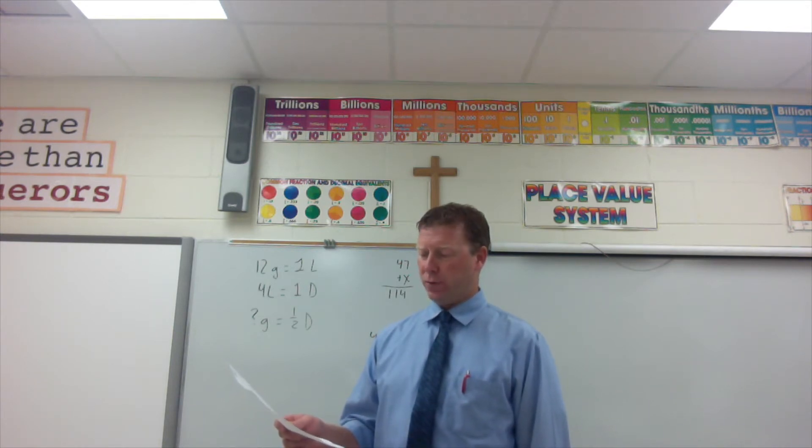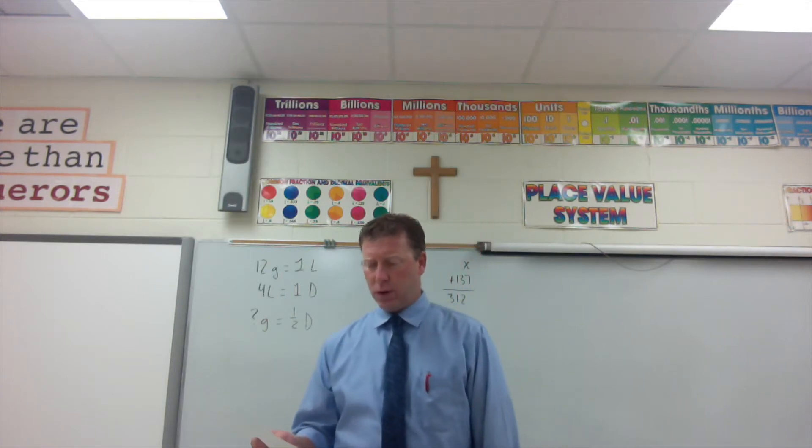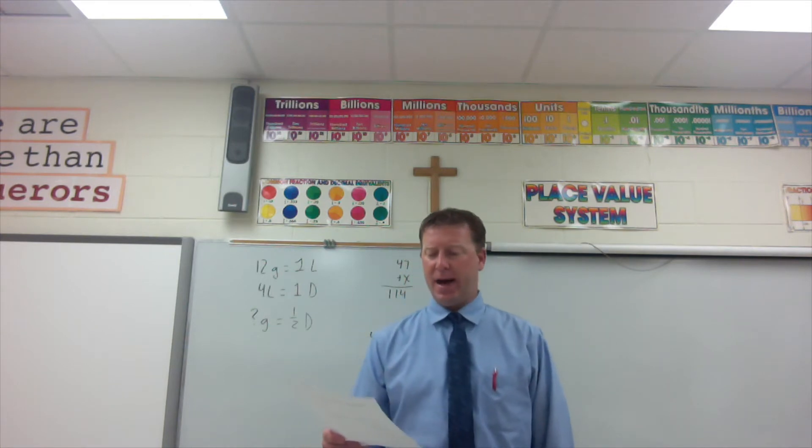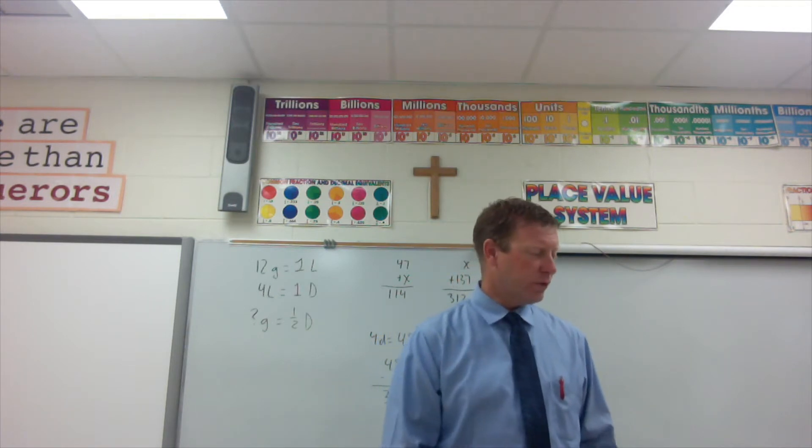Multiply and add, twenty over three. Next row. Multiply and add, eleven over four. Multiply and add, ten over three. Multiply and add, nine over two. Multiply and add, fifteen over eight. And multiply and add, twenty-five over two.